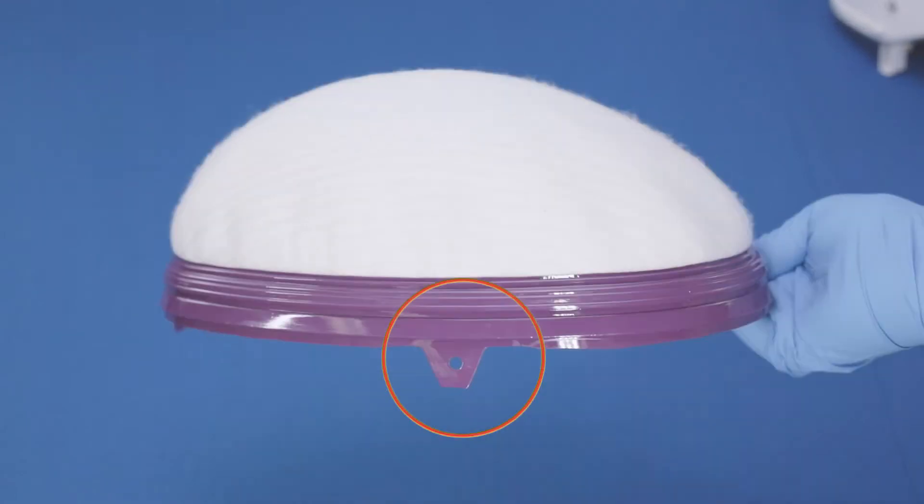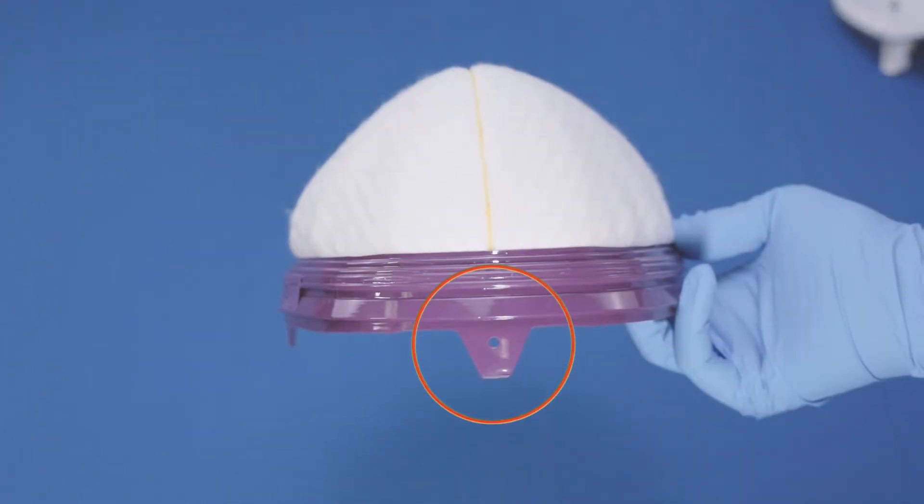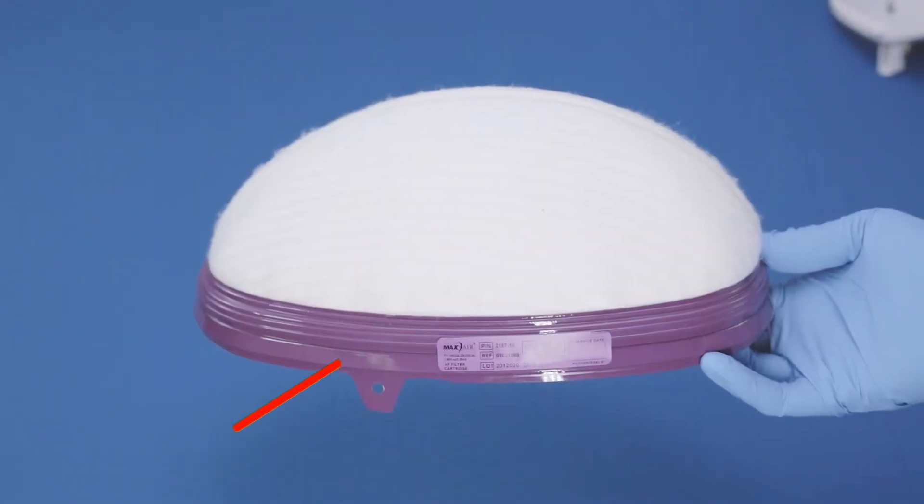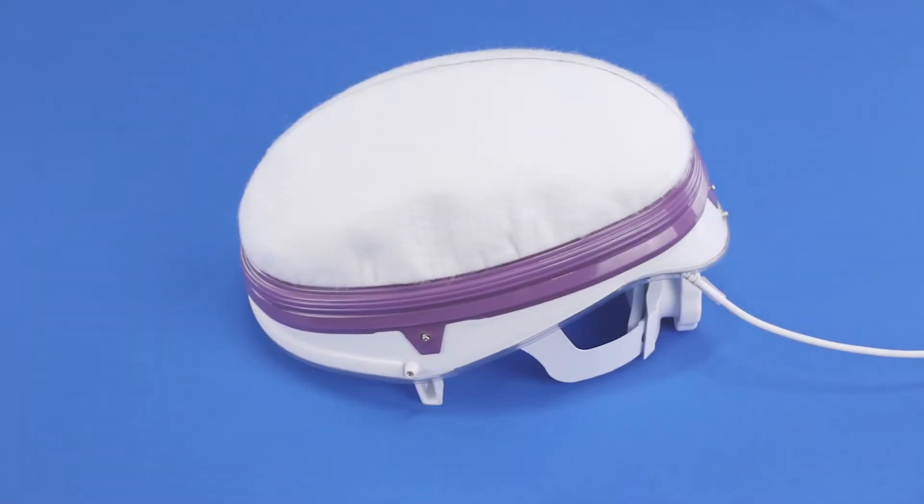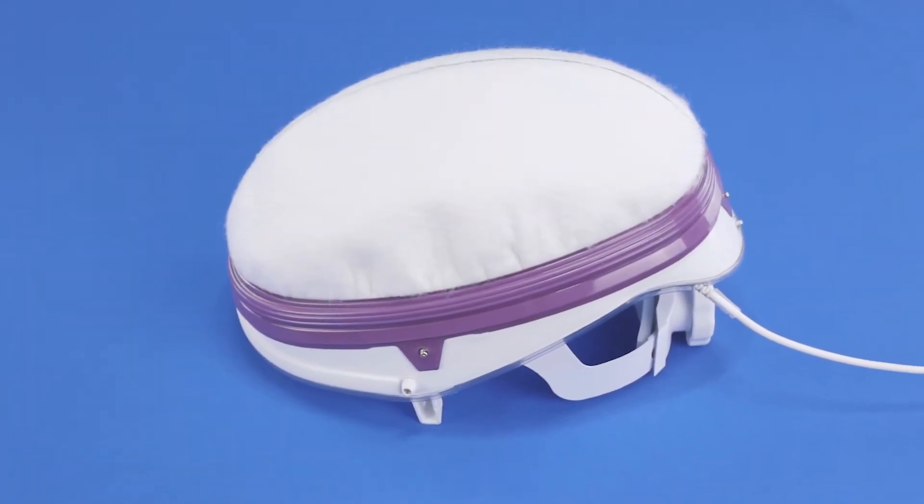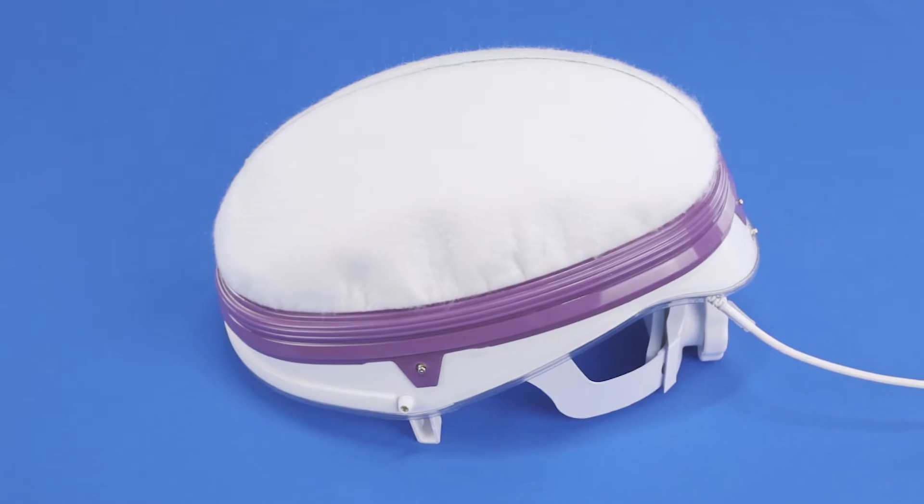Key components of filter cartridges include right and left side snap tabs, rear snap tab, and magenta retainer ring. All MaxAir filter cartridges assemble and disassemble in the same manner as the example shown in this video.